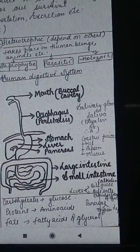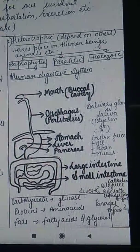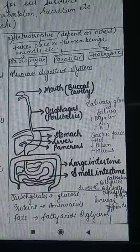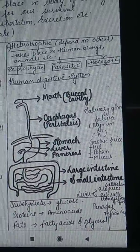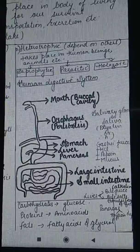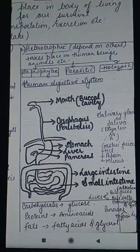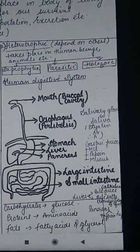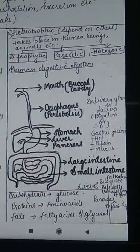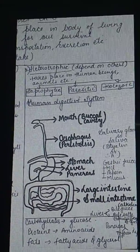There are mainly five nutrients: carbohydrates, proteins, fats, vitamins, and minerals. Out of these five, only carbohydrates, fats, and proteins give us energy. What about vitamins and minerals? Our body still requires vitamins and minerals.